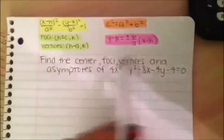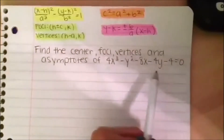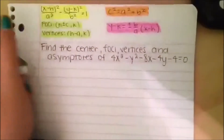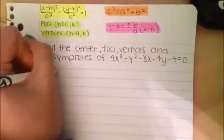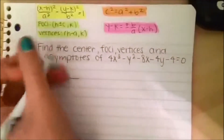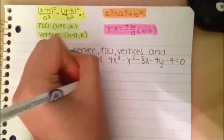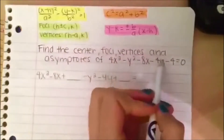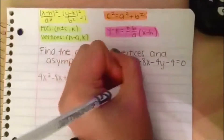The first step we have to do, since this equation is not in standard form, is complete the square in order to get it into standard form. First, we put the x terms together: 4x squared minus 8x plus a blank. Then the y terms: minus y squared minus 4y plus another blank. And we move the 4 to the other side of the equal sign, so it becomes 4.